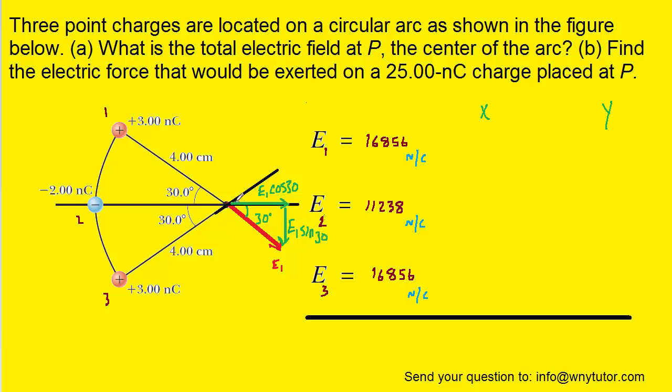Also notice that the x component points to the right, so it is therefore positive, but the y component points downward, so it will indeed be negative. So what we'll do is we'll fill that into the table. Again, we're going to multiply E1 by the cosine to get the x component, and then by the sine to get the y component. Notice again the negative sign on the y component.